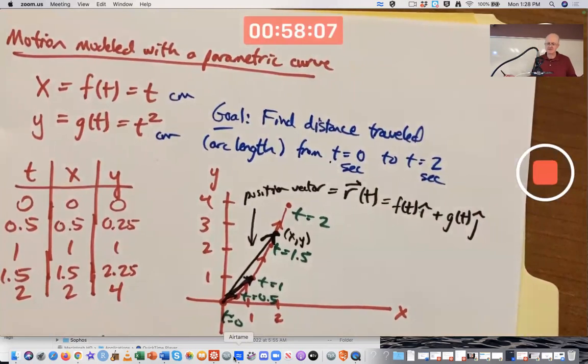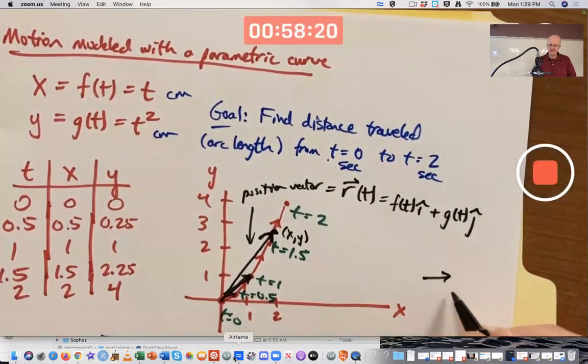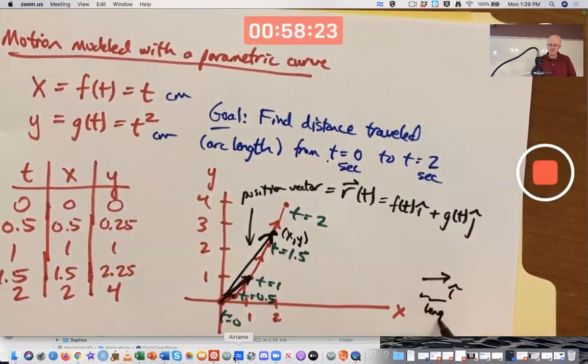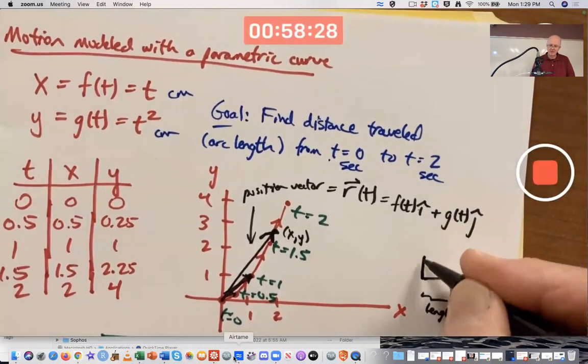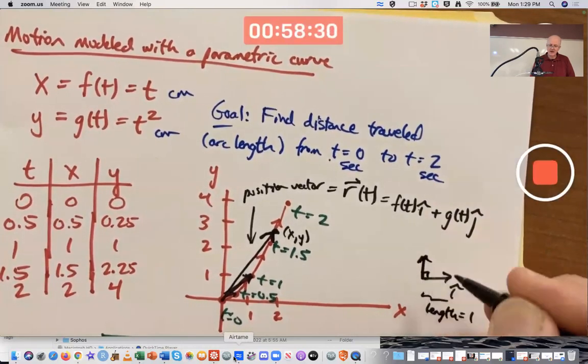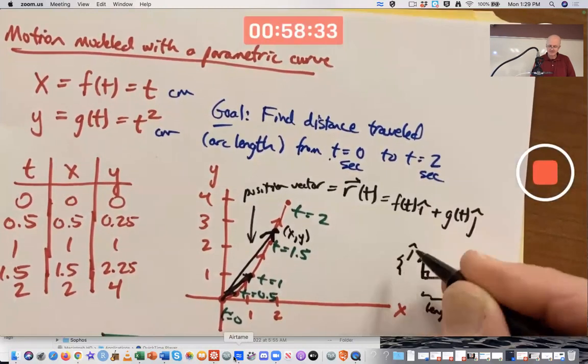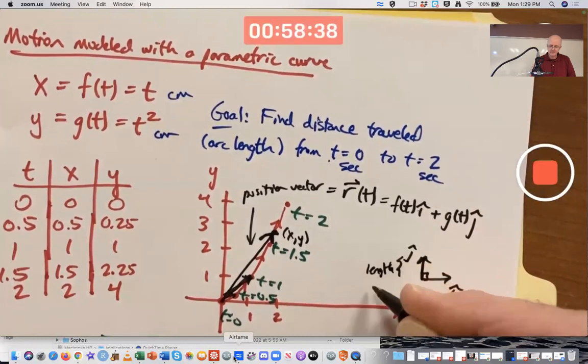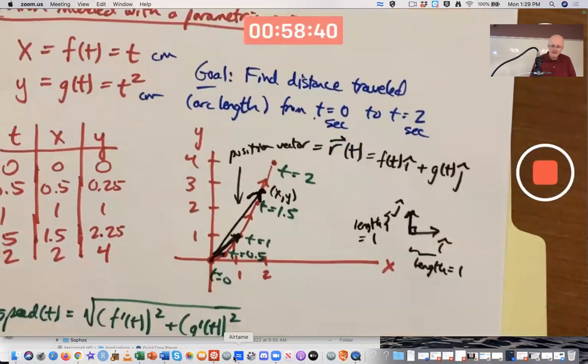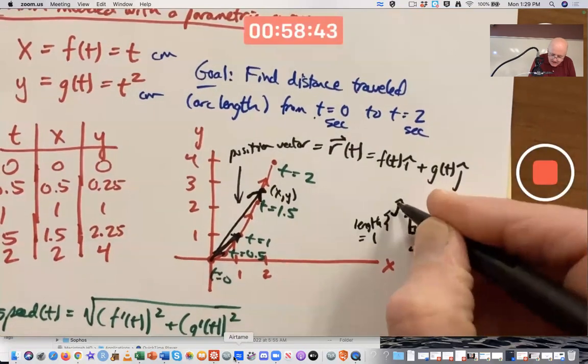I hat and J hat. What in the world are those and why are we adding them? I hat and J hat are called the standard unit vectors. I hat points directly to the right and has length one. J hat points directly upward at a 90 degree angle from I hat and also has length one.